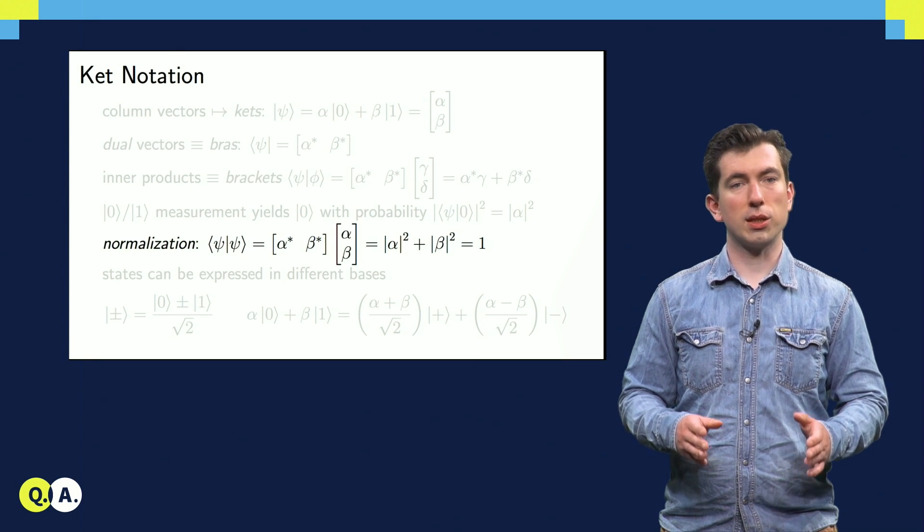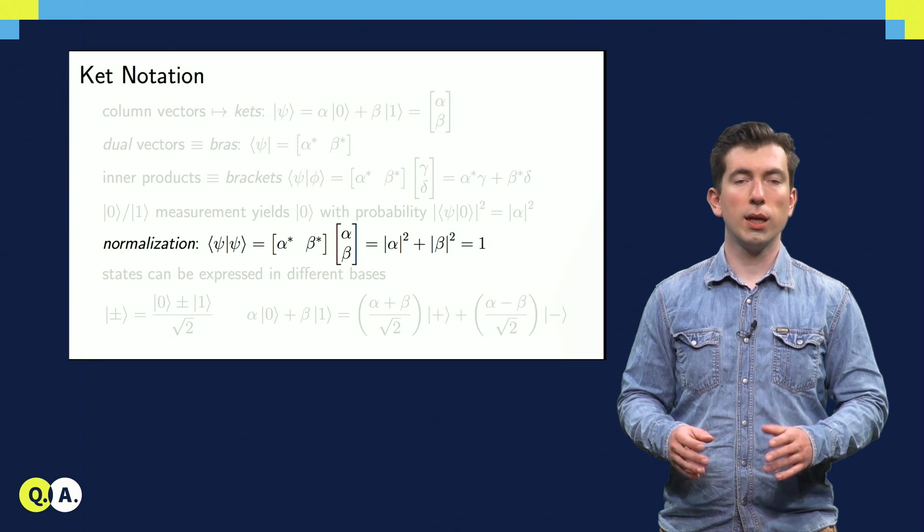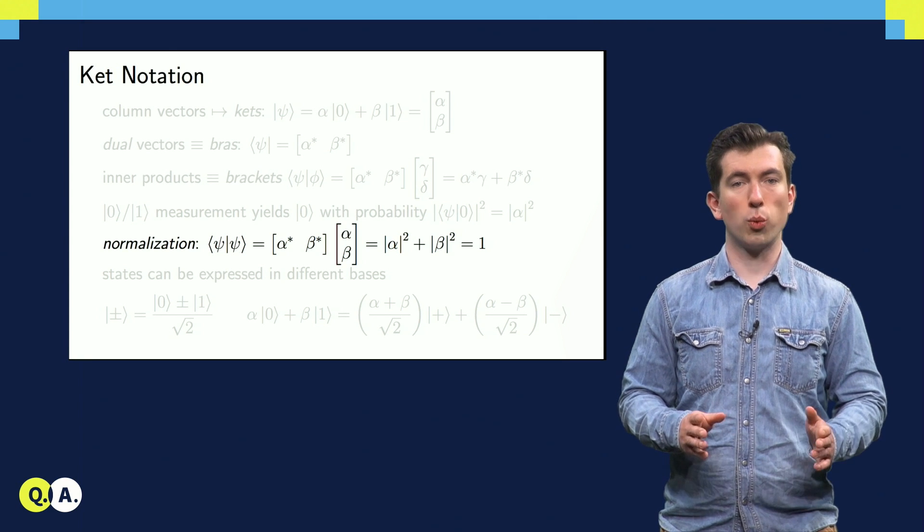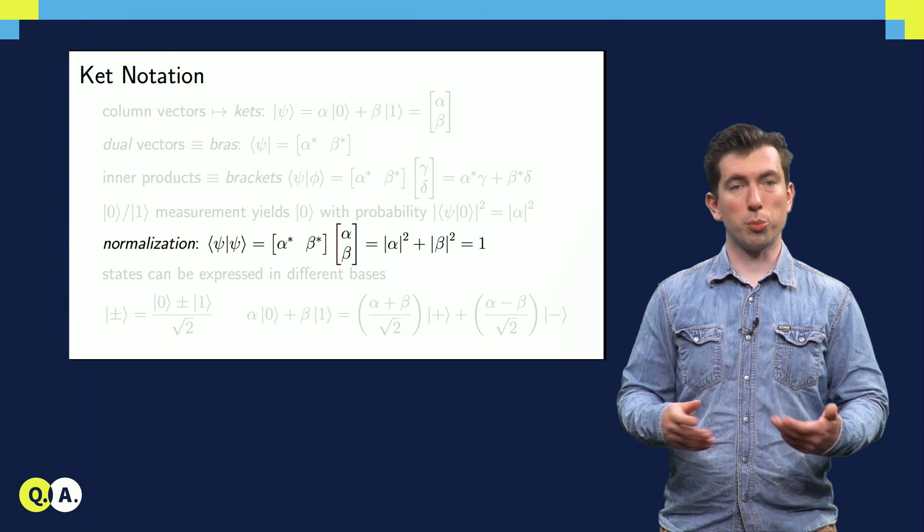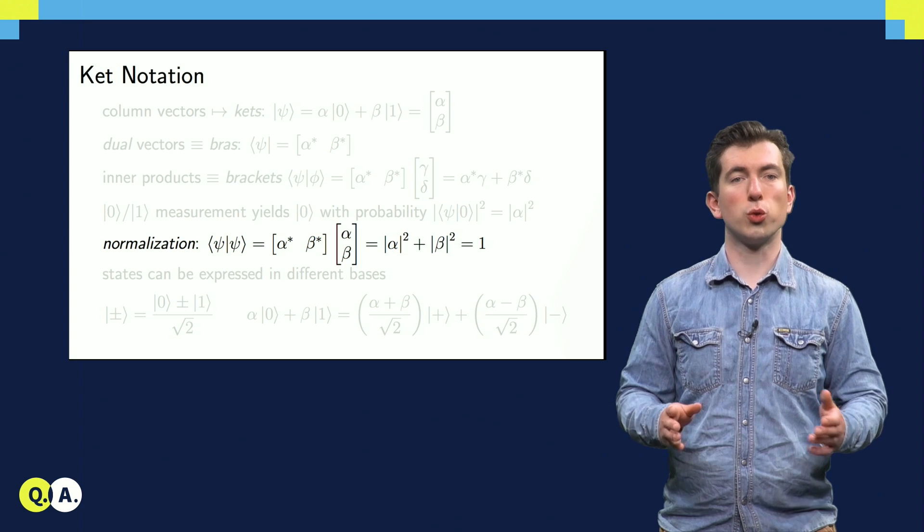One consequence of this is that since such a measurement on a qubit state must result in 0 or 1, these squared magnitudes must sum to 1 since they're probabilities. This is called Born's rule, and the constraint that the probabilities must sum to 1 is called normalization.